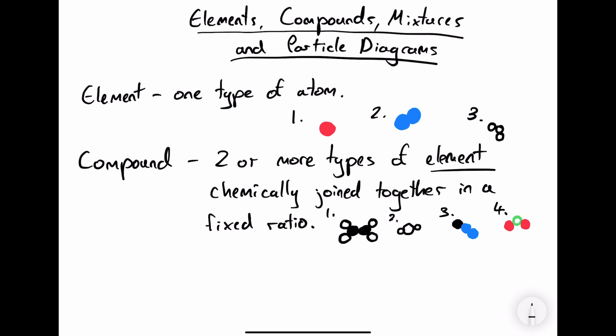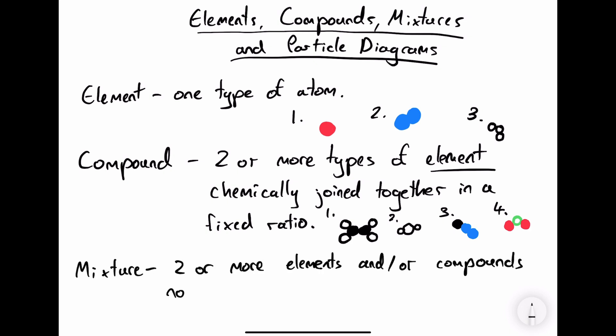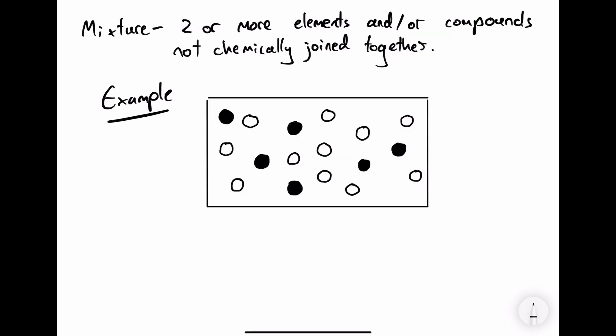A mixture is two or more elements and/or compounds not chemically joined together. Here's an example of a mixture. We know it's a mixture because it's made of two different kinds of atoms or elements which are not chemically joined together, and we can tell they're not chemically joined together because there's distance between the particles.